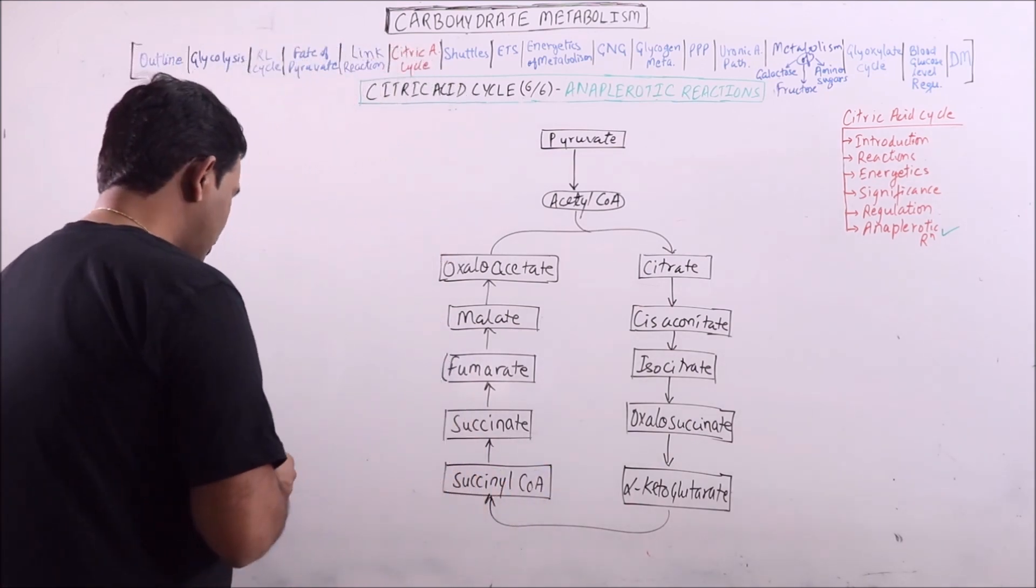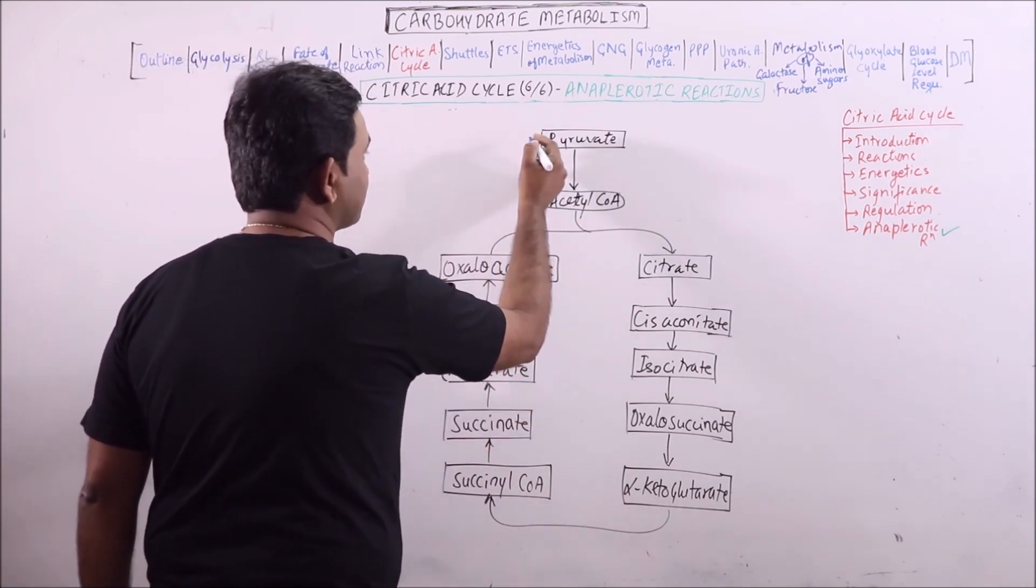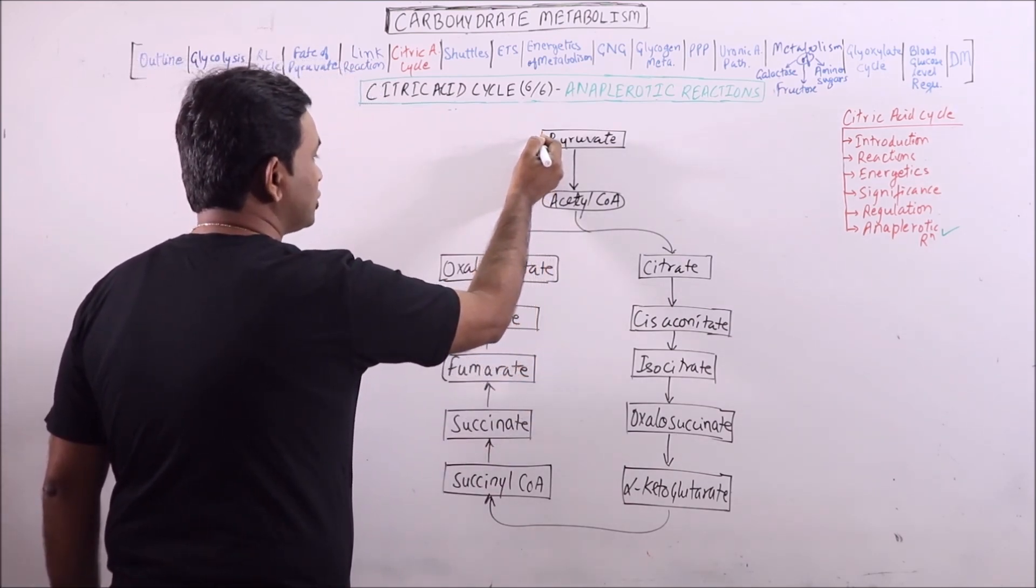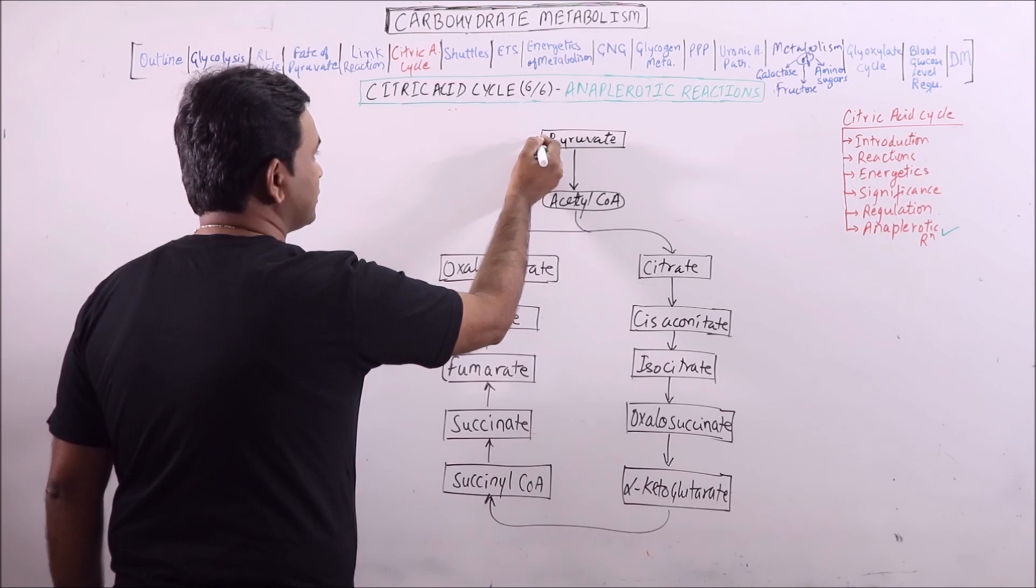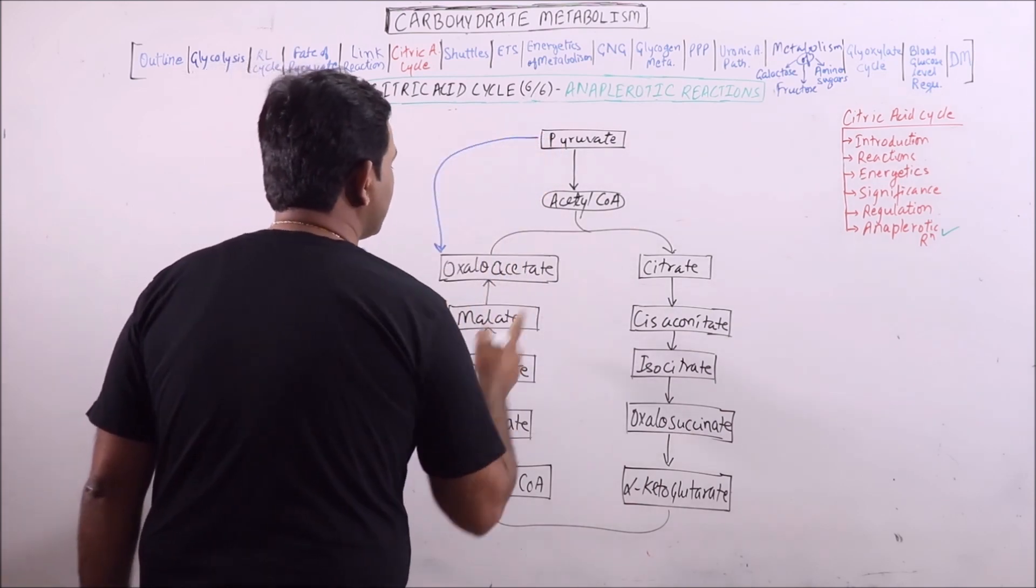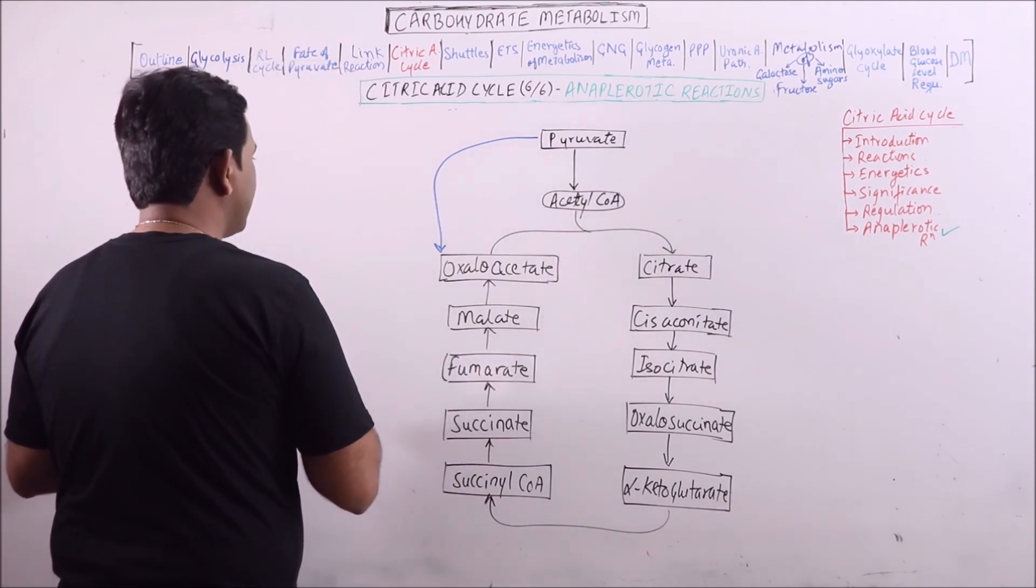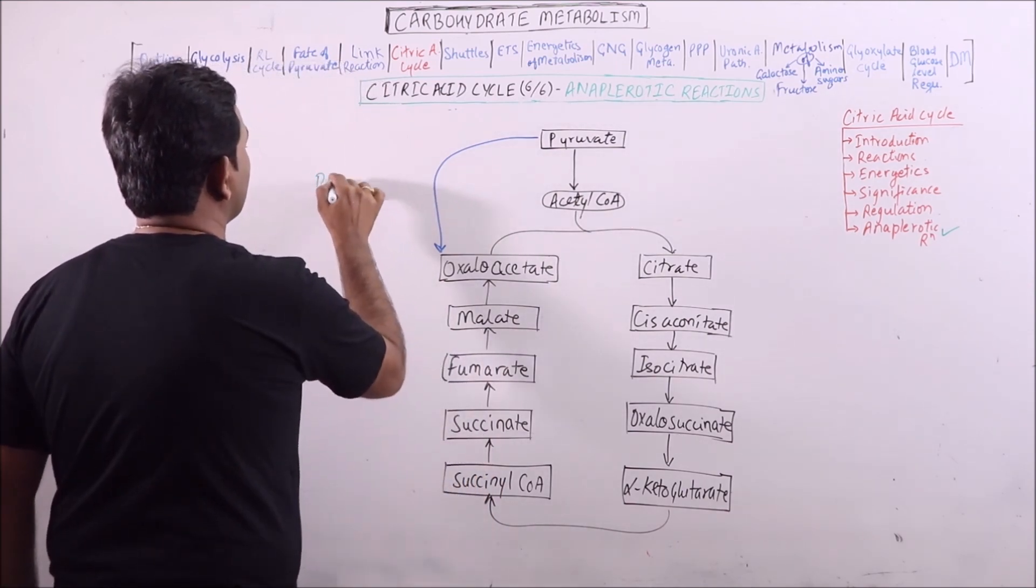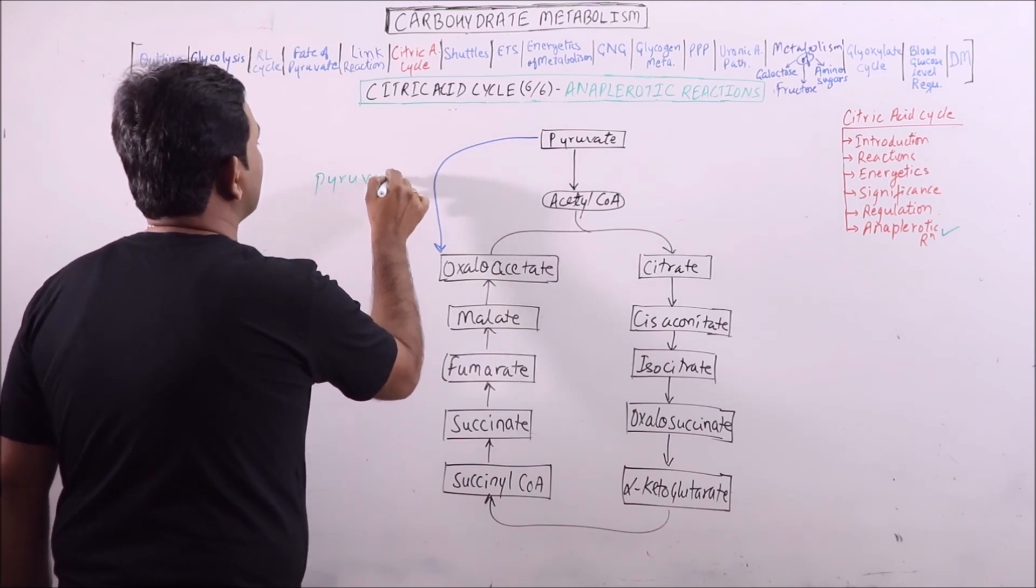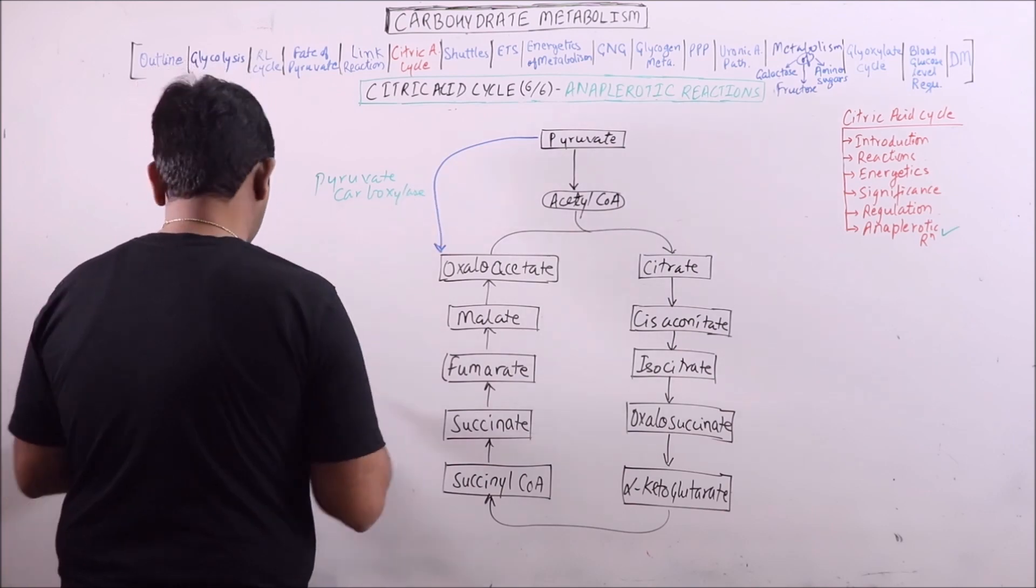Now what are those reactions which enables it to continue in forward direction? So pyruvate, the most important anaplerotic reaction is the formation of oxaloacetate from pyruvate. This step is mediated by pyruvate carboxylase.